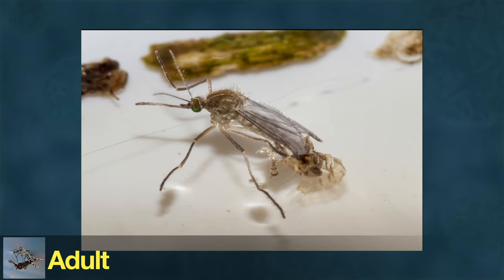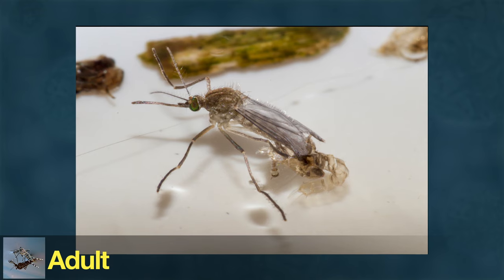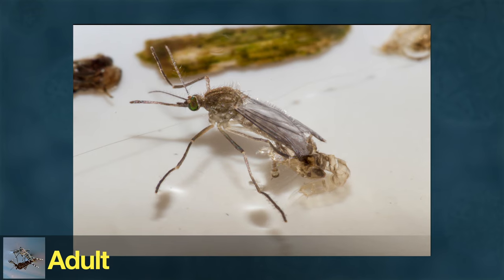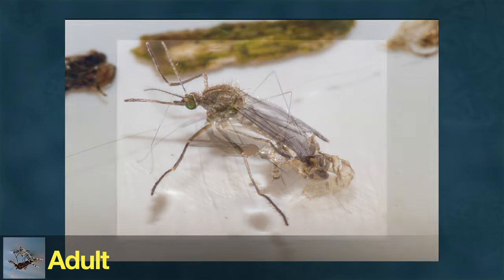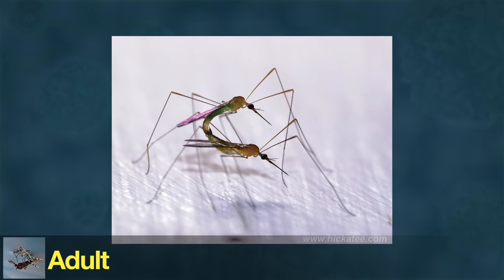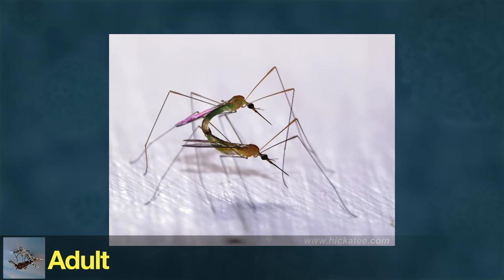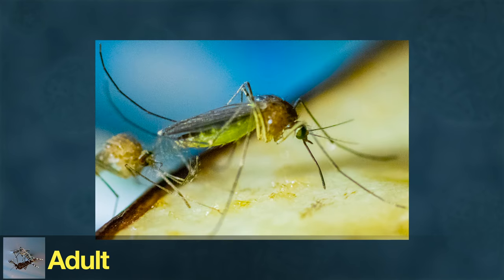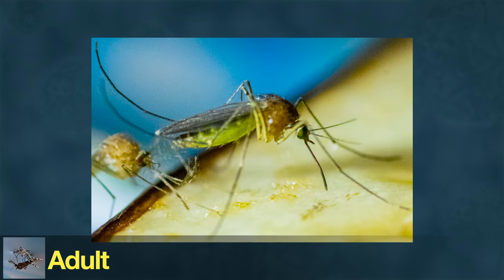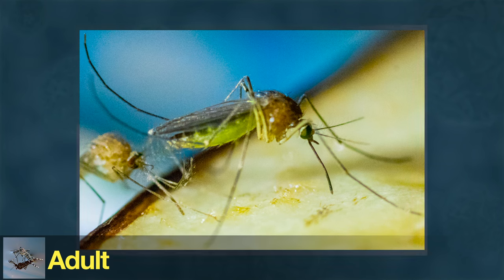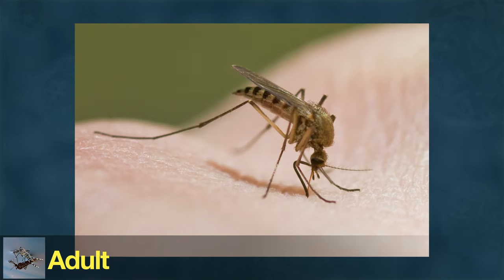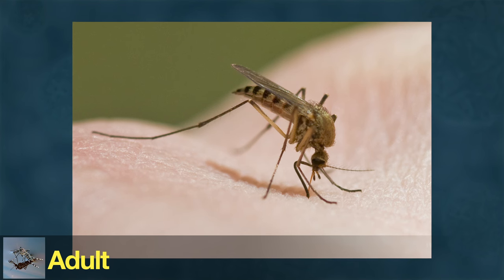After 1 to 4 days, the mosquito splits out of the skin it had as a pupa and emerges as an adult. Shortly after, it mates. Both male and female mosquitoes feed on nectar from plants, but females also need to drink blood from animals, such as humans, in order to make eggs.